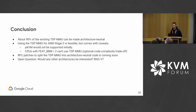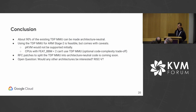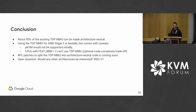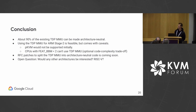In conclusion: about 90% of the existing TDP MMU can be made architecture-neutral. Using the TDP MMU for ARM stage 2 is feasible but will require some changes and comes with caveats — PKVM would not be supported initially, and CPUs with break-before-make less than level 2 would either not be supported or would require adding break-before-make support, which is a code complexity trade-off. RFC patches to refactor the TDP MMU will be shared probably within the next month, and I'd be curious to hear if other architectures would be interested and what other changes would be needed, as well as feedback on the PKVM caveat.